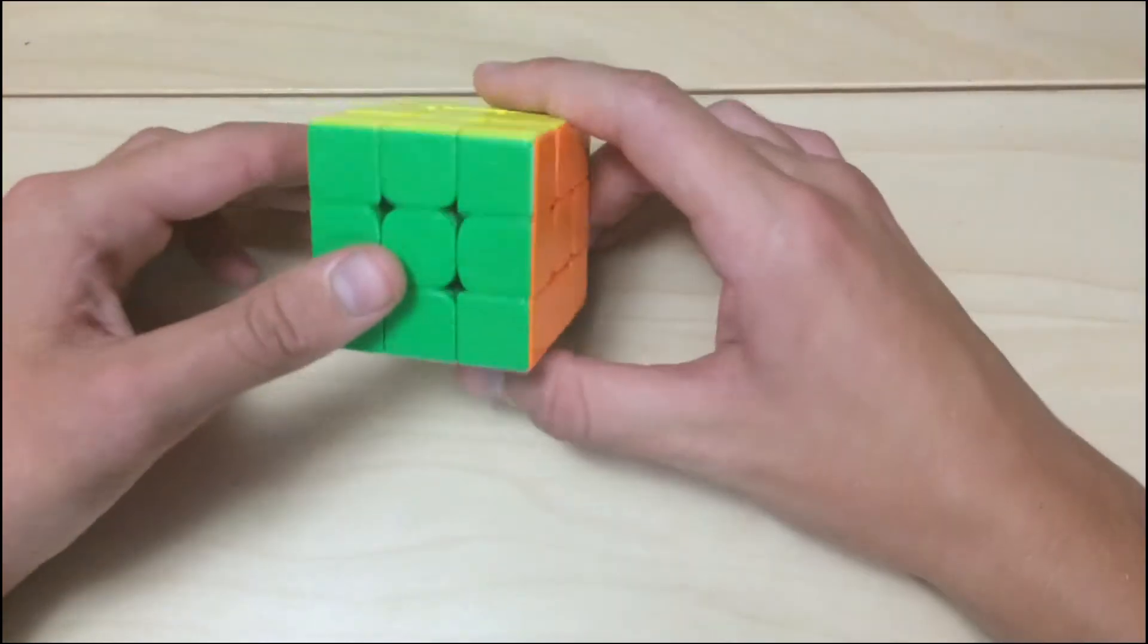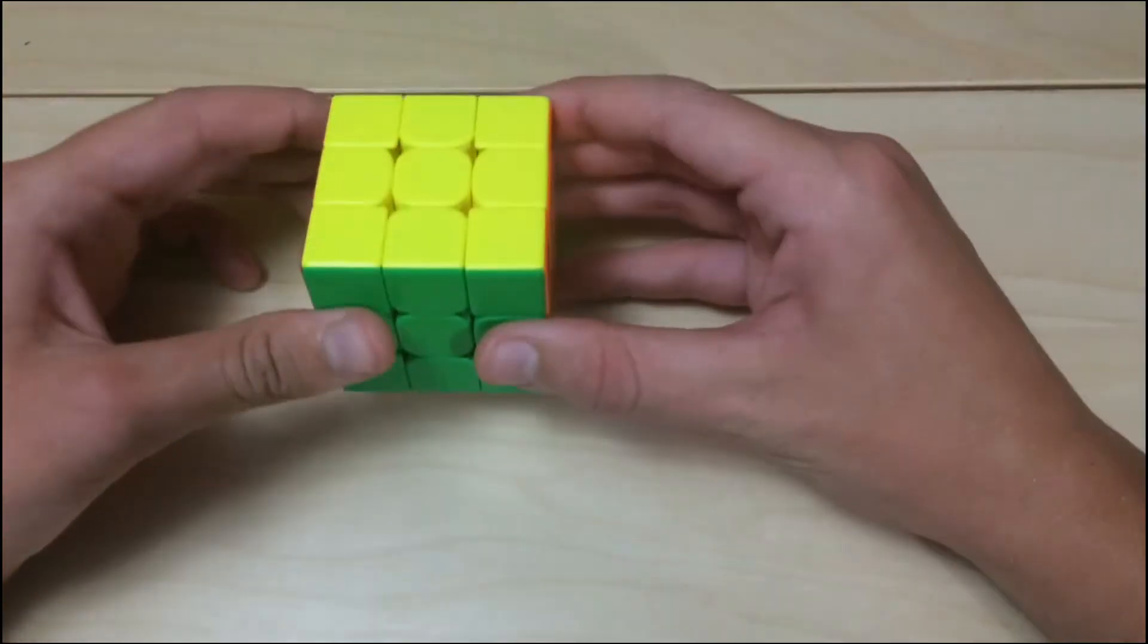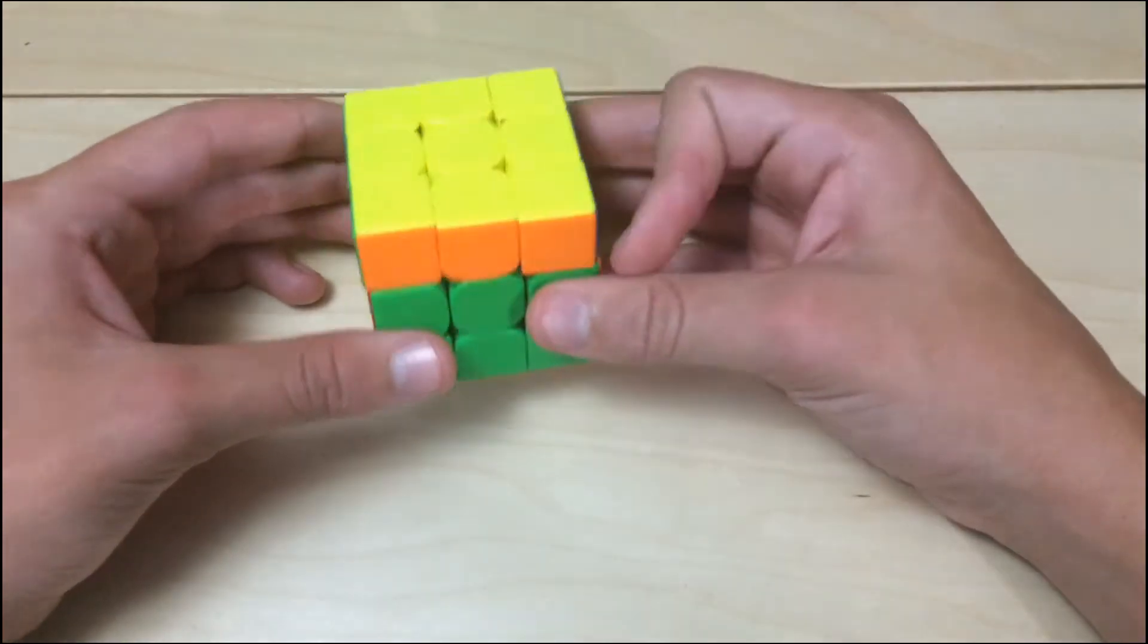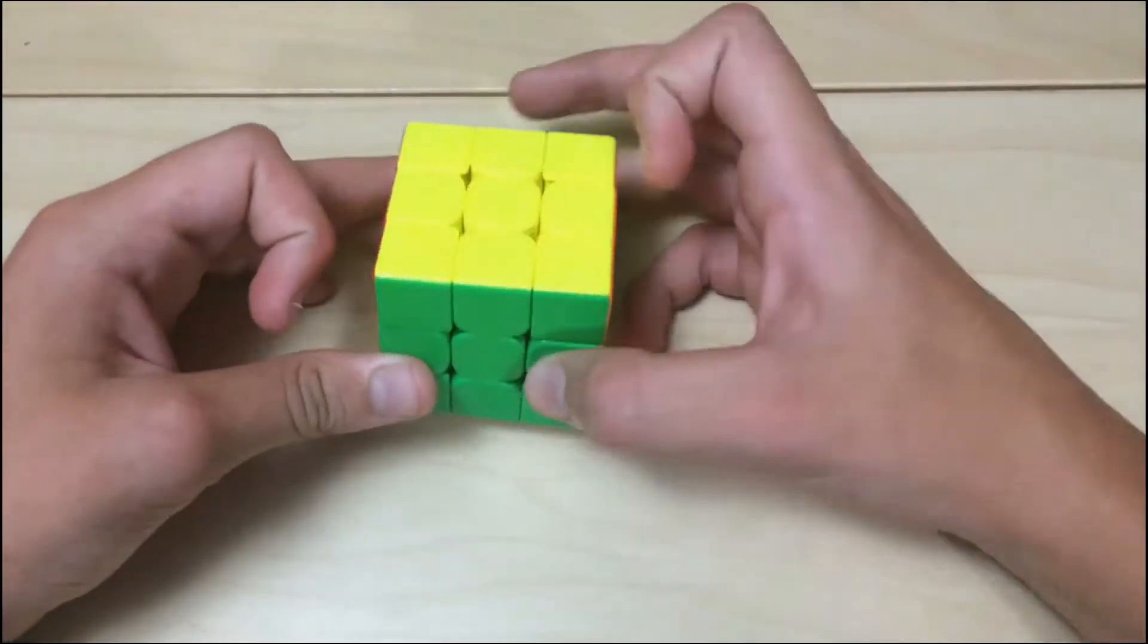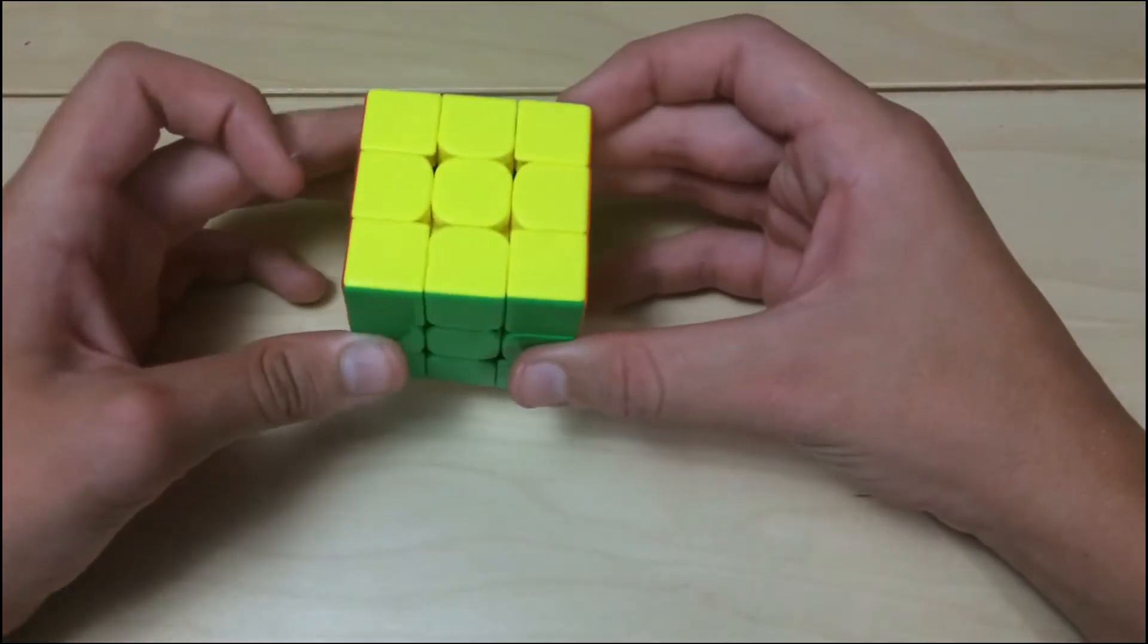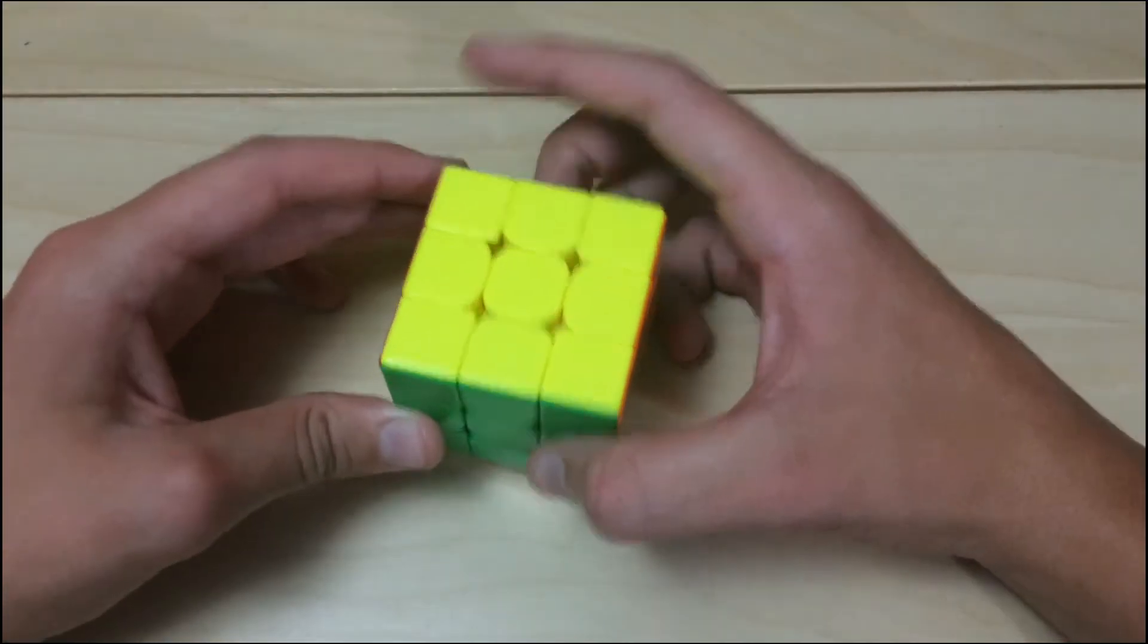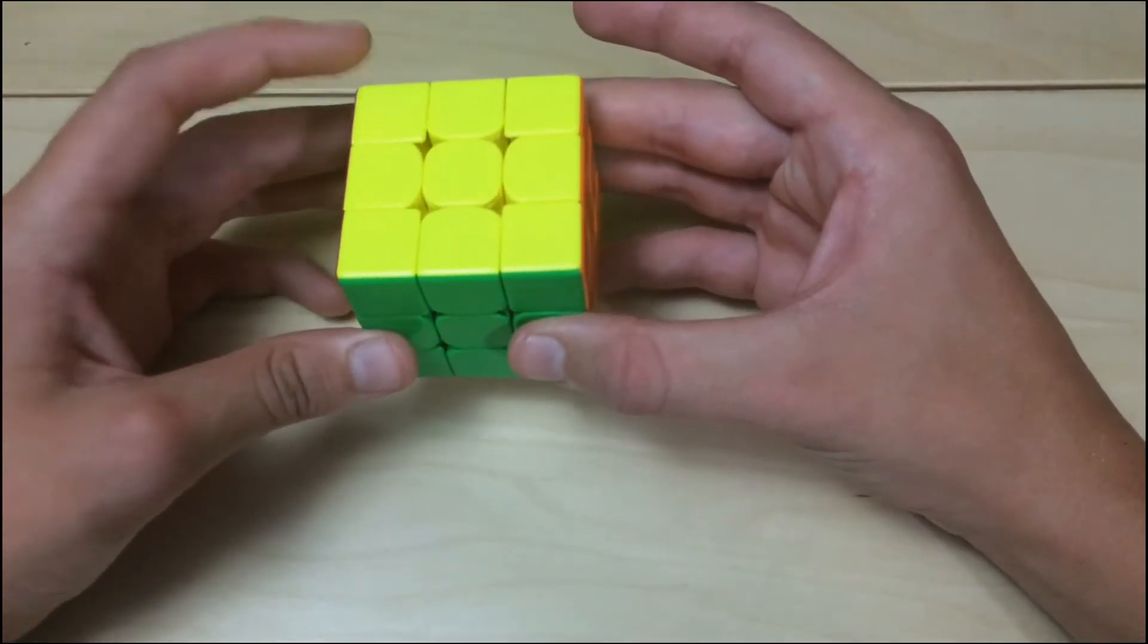And then for where, we have to know what move we're doing. So if I was doing a U move, for instance, like that, it's in the U layer. So then we number them on the U layer in a clockwise order starting from here, from the top left.